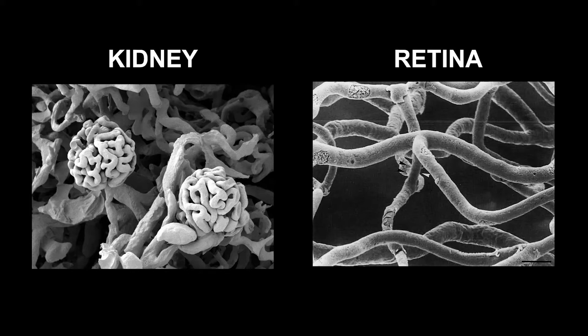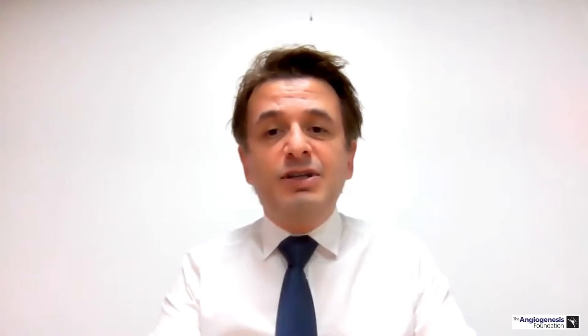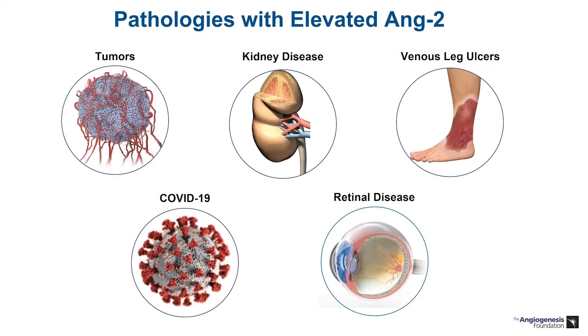In the kidney, vessels form glomeruli. In the retina, they form a plexus to supply oxygen without compromising transparency. Interestingly, elevated levels of ANG2 have been observed across a number of diseases involving vascular pathology — for example, in cancer, renal diseases, non-healing wounds, even COVID-19, and retinal diseases from neovascular AMD to DME and DR.